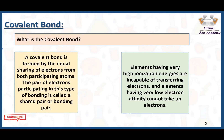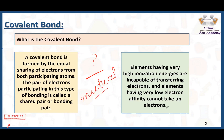Why is the covalent bond formed? There are some non-metals or atoms that don't lose and gain electrons. Somehow they need to get stabilization, and that is the reason they form covalent bonds. Elements having very high ionization energies are incapable of transferring electrons, and elements having very low electron affinity cannot take up electrons. So in these types of atoms, a bond is formed by mutual sharing of electrons, which is a covalent bond.